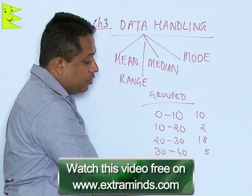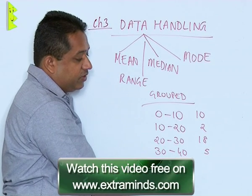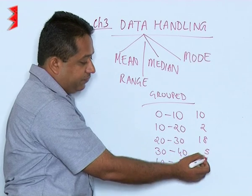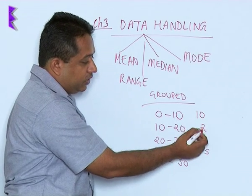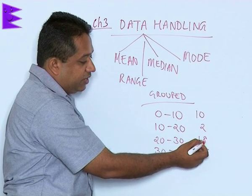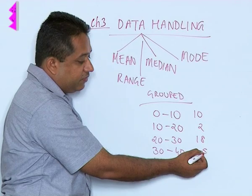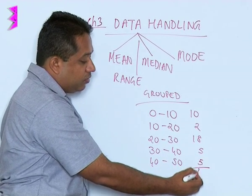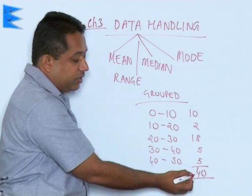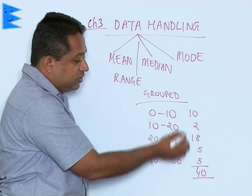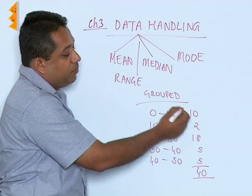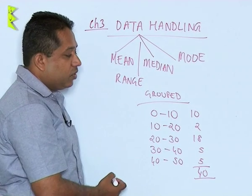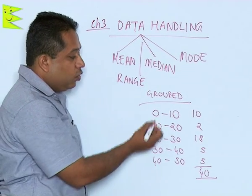The number of students between 40 and 50 — since the total number of students is 40 in the class, this is 5. 10 plus 2 is 12, 12 plus 18 is 30, 30 and 5 is giving us 35, so again we have 5 here. Total number of students in the class is 40. This gives us a little more meaningful information rather than just writing the data in a random order — we are grouping it.